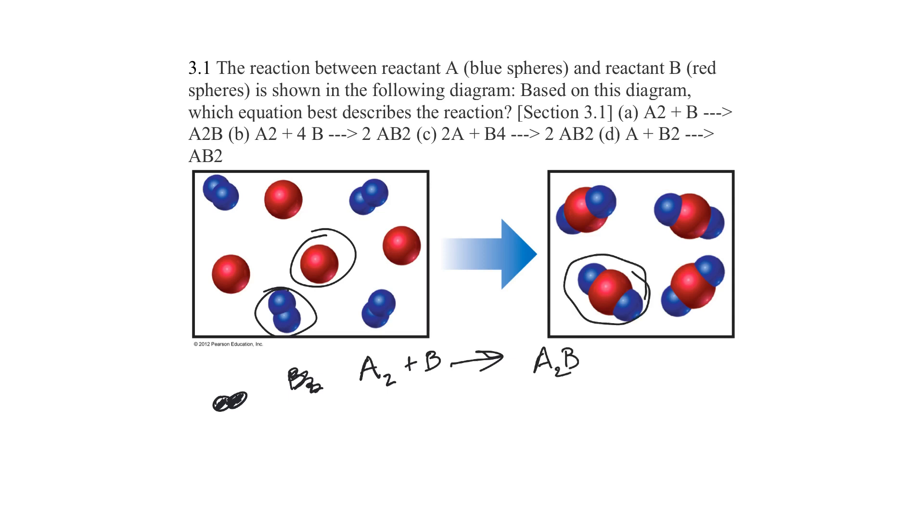I'd say it's number A, because A2 is blue, two of them, one B, put it together, there's two blues and a red together, A2B.